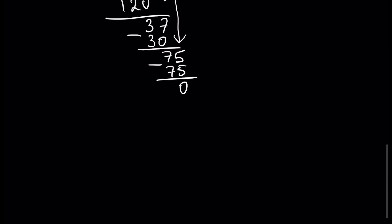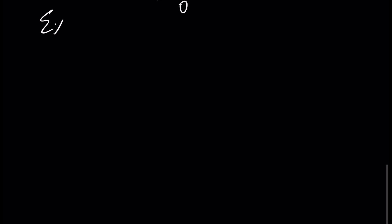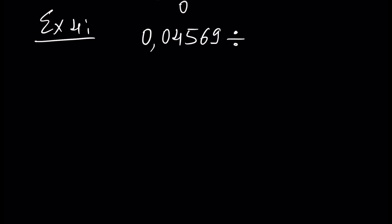Let's solve the last example, example number 4, where we divide a decimal number: 0.04569 divided by 0.0012. Here we have decimal fraction divided by decimal fraction. Before, we solved examples where we performed division by integer number. How do we transform this problem into one where we divide by an integer? Very easy.